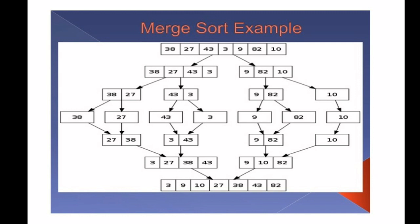Again merge the two arrays by sorting the least value as: 3, 9, 10, 27, 38, 43, 82.